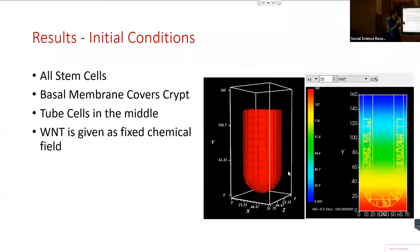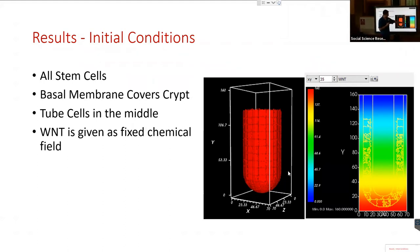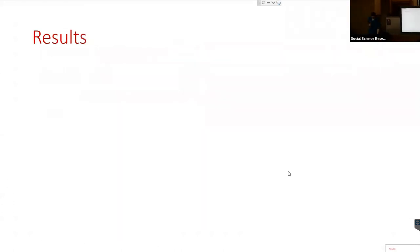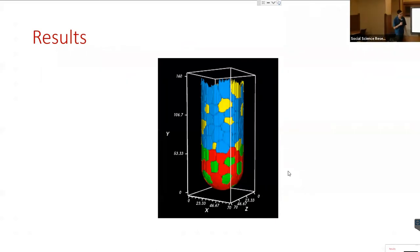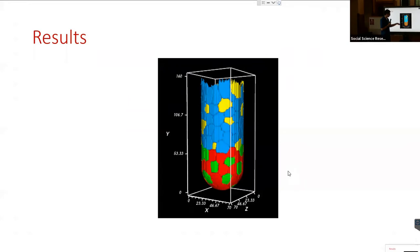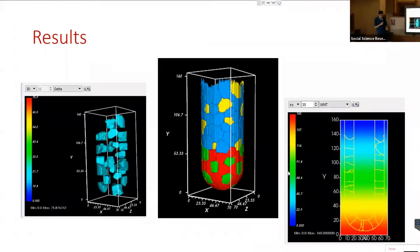As initial conditions, all cells are stem cells, covered by basal membrane and tube cells. Wnt is a fixed chemical gradient. We select Wnt thresholds for differentiation. After simulating for some number of Monte Carlo steps, I am able to see distinct results and reproduce similar results to the published literature.